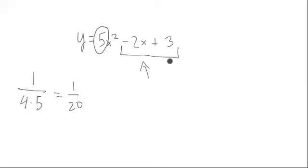Now, we would have to complete the square in this one in order to see where that vertex would be located. So we could factor out a 5, and then we'd have x squared minus 2 over 5x plus 3.